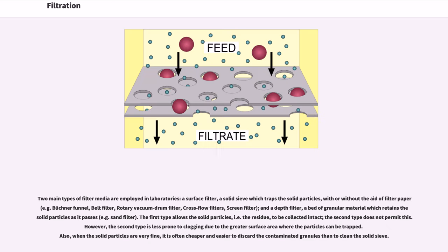Two main types of filter media are employed in laboratories: a surface filter, a solid sieve which traps the solid particles, with or without the aid of filter paper, for example Buchner funnel, belt filter, rotary vacuum drum filter, cross flow filters, screen filter, and a depth filter, a bed of granular material which retains the solid particles as it passes, for example sand filter.